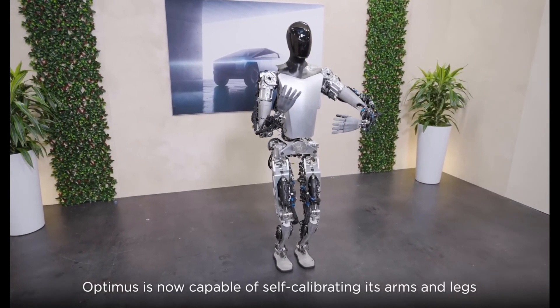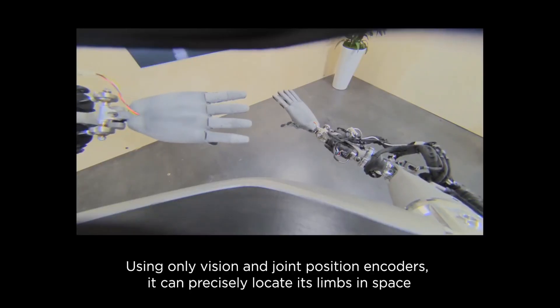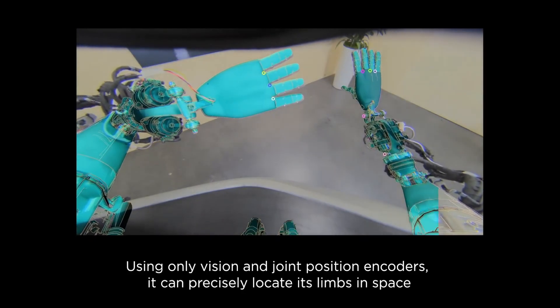In the video, Tesla highlights that the robot's neural network operates independently on board, relying solely on vision.